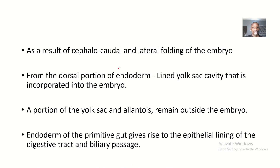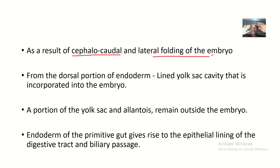Development of the primitive gut actually starts as a result of cephalocaudal and lateral folding of the embryo. The embryo is folding from the head down to the caudal part — that's what we call cephalocaudal folding of the embryo.